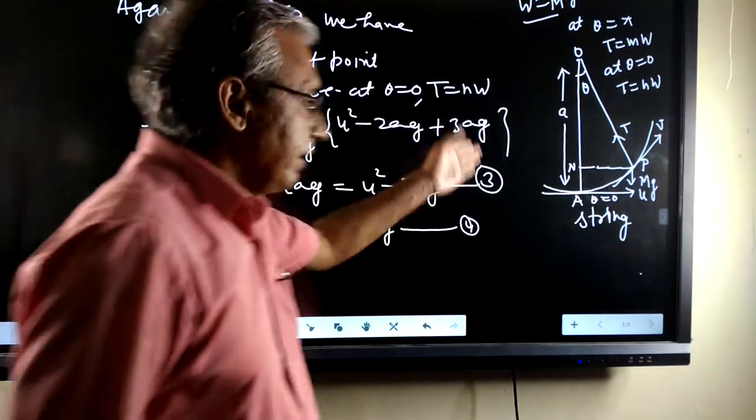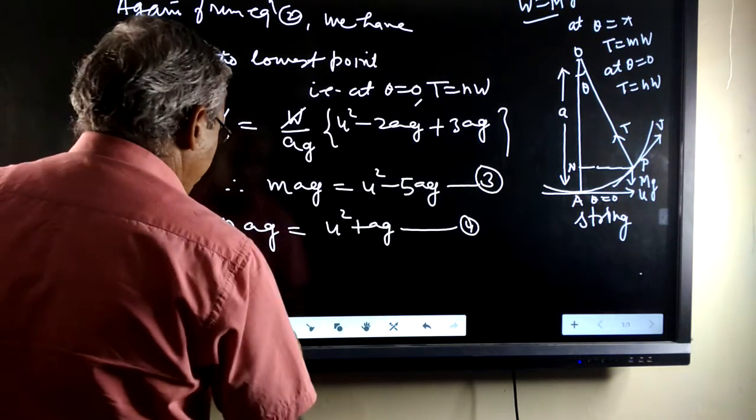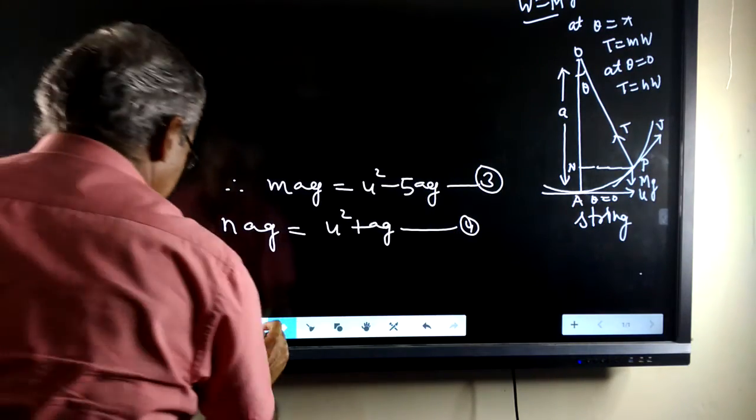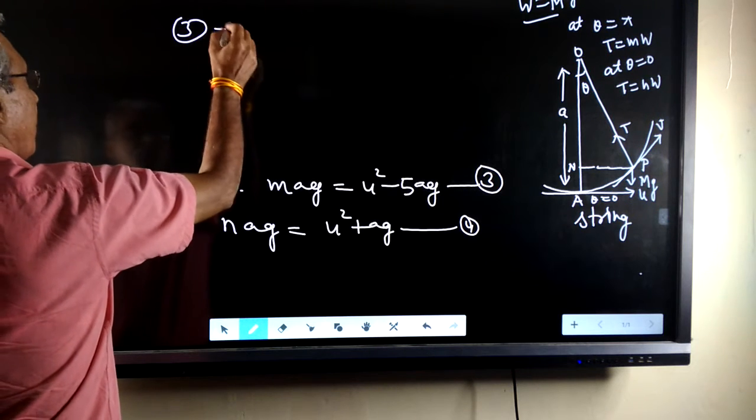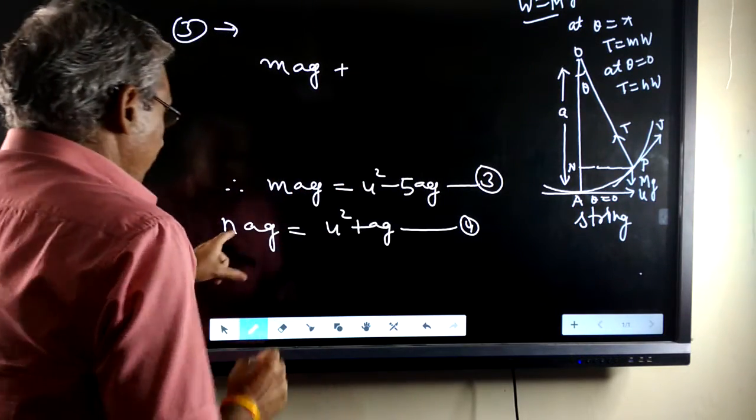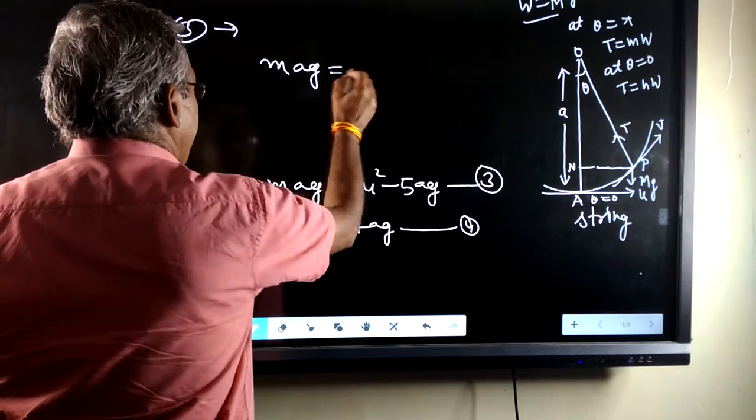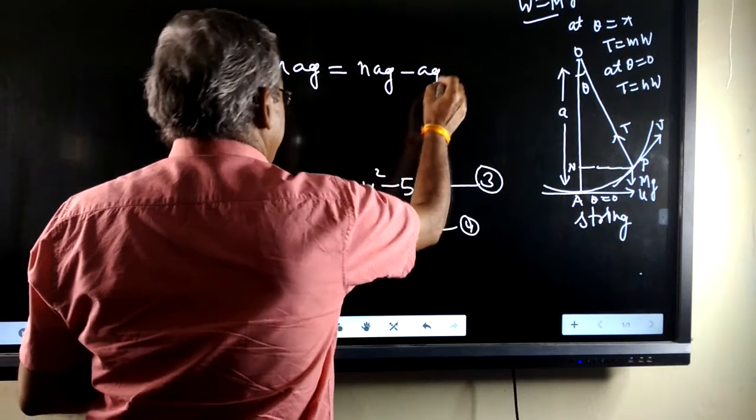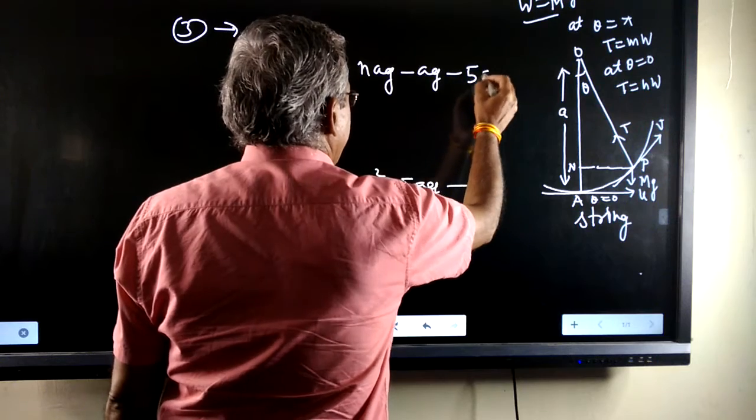From equations third and fourth, we eliminate u square. Then, we have, this can be written as, from third, this is mag plus, putting the value of u square from equation fourth, we have, u square minus 5ag.